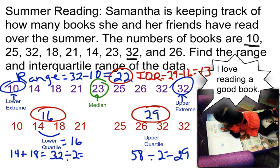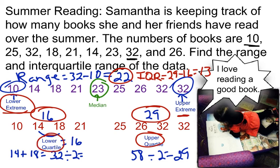My range is 22 and my interquartile range is 13. Sometimes students get range and interquartile range confused. It is important that you remember: the range is your upper extreme subtracted with your lower extreme. And the interquartile range is your upper quartile — the median of your upper half of numbers — subtracted with your lower quartile, or the median of your lower half of data.